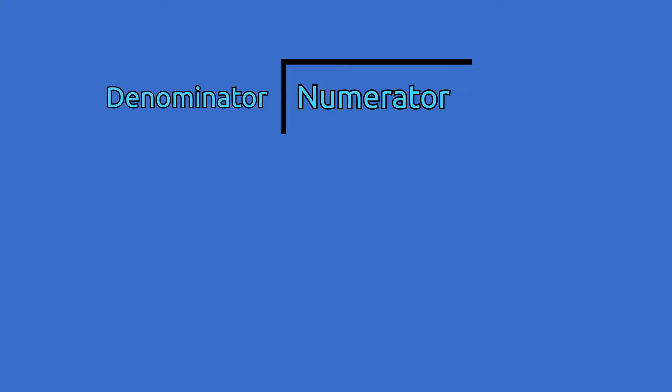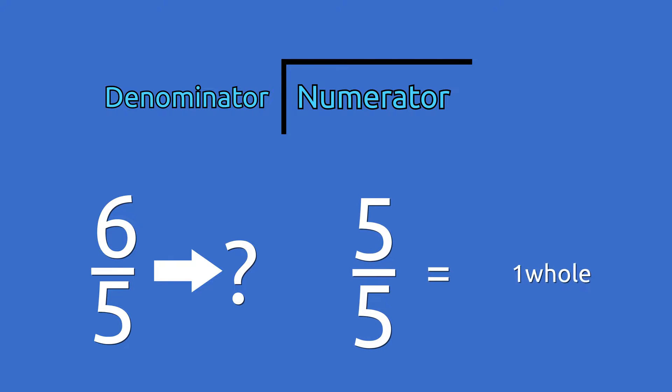A different way to convert an improper fraction into a mixed number is by dividing the numerator of the fraction by its denominator. The reason why we're dividing is because we want to see how many groups of 5 we can form from this fraction, since we know that we need 5 fifths to complete a whole.